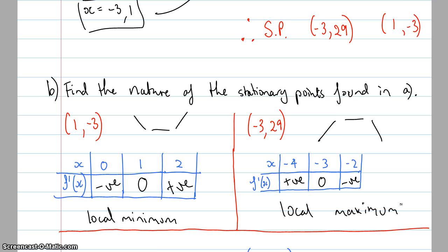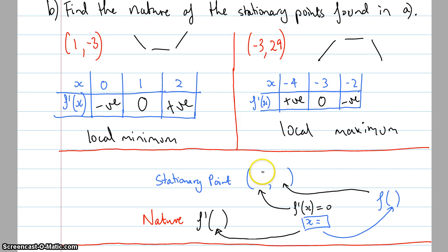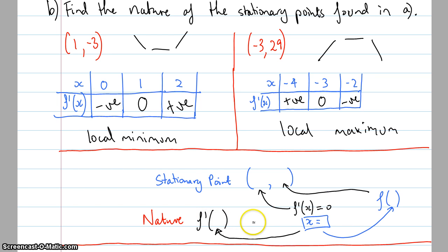People get confused about whether to substitute back into the gradient function or the original function, so here's a flow diagram. To get the x value of a stationary point, find the derivative, make it equal to zero, and solve for x. To find the y value, substitute x back into the original function. To find the nature, substitute x values either side into the derivative f'(x) — this tells you the gradient sign on each side of the stationary point.